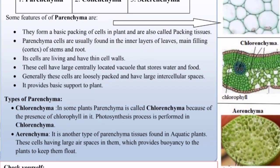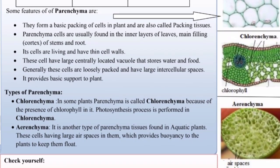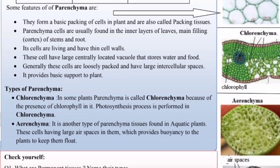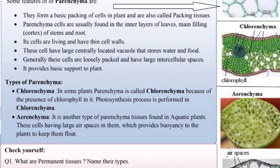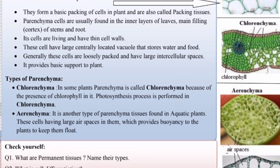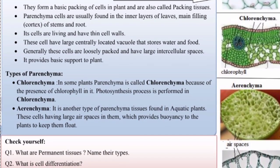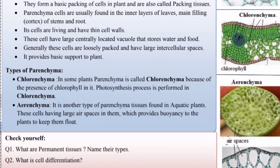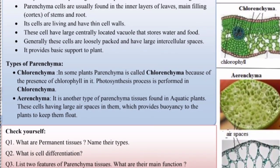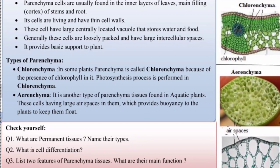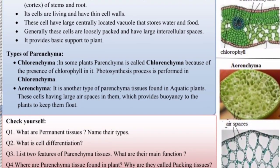Types of parenchyma: in some plants, parenchyma is called chlorenchyma because of the presence of chlorophyll in it. The photosynthesis process is performed in chlorenchyma. Aerenchyma is another type of parenchyma tissue found in aquatic plants. The cells have large air spaces in them which provide buoyancy to plants to keep them afloat.